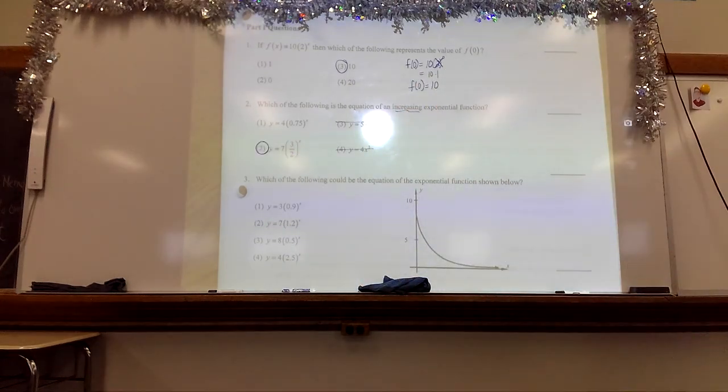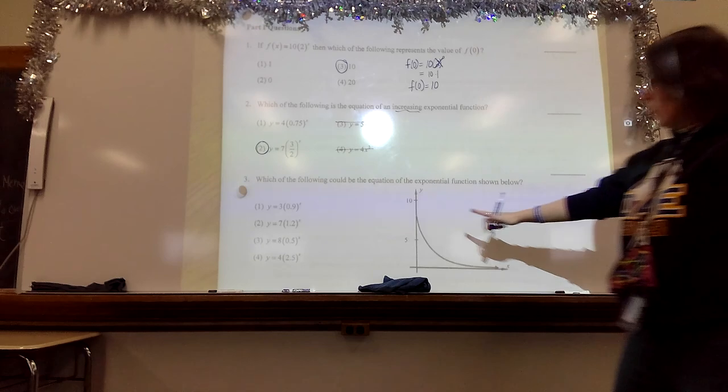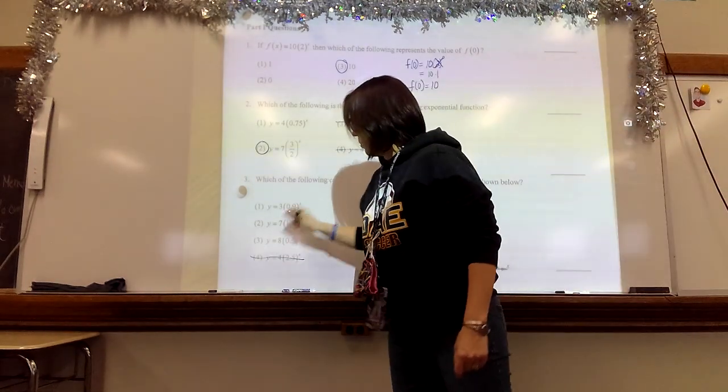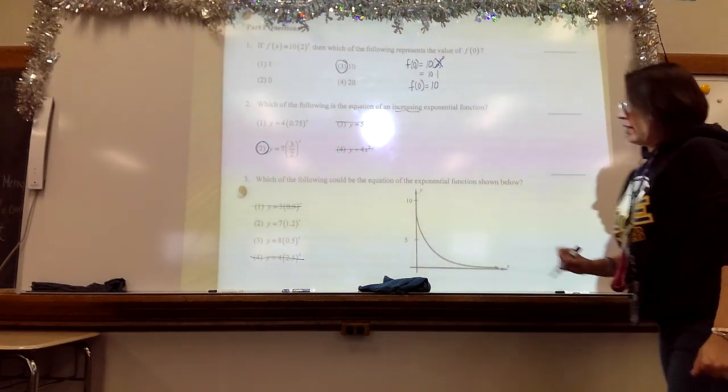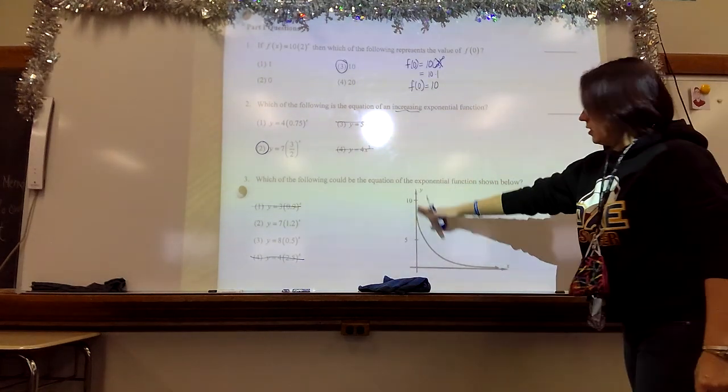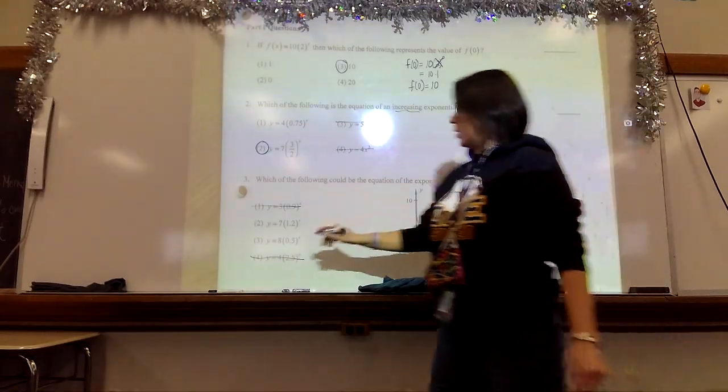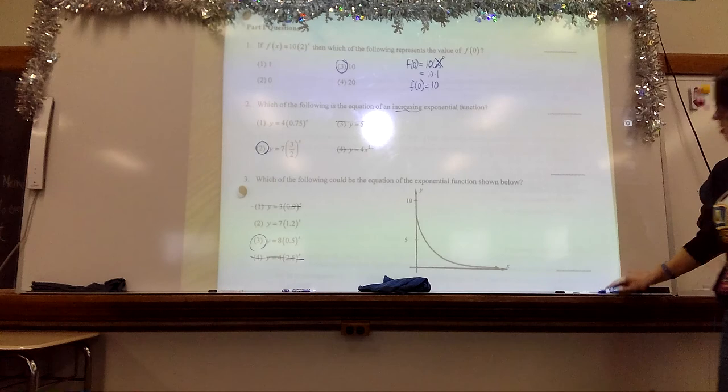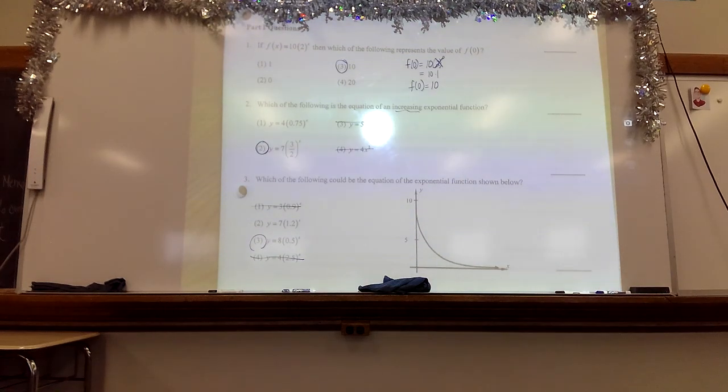Which of the following could be the equation of the exponential function shown below? Well, there's a couple of things that I can use as hints here. My y-intercept is between 5 and 10, so it can't be those two. And now we have to use the growth factor to make the rest of the decision. This is a decreasing one, which means that my growth factor has to be less than 1. Therefore, the correct answer is number 3.